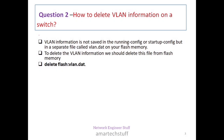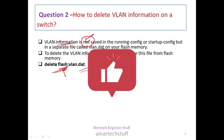Question number two: how do you delete VLAN information on a switch? This is a tricky question. VLAN information is not saved in the running configuration or startup configuration of the switch. It is saved in a separate file called vlan.dat on the flash memory of the switch. To delete VLAN information, you delete this file using the command: delete flash:/vlan.dat.